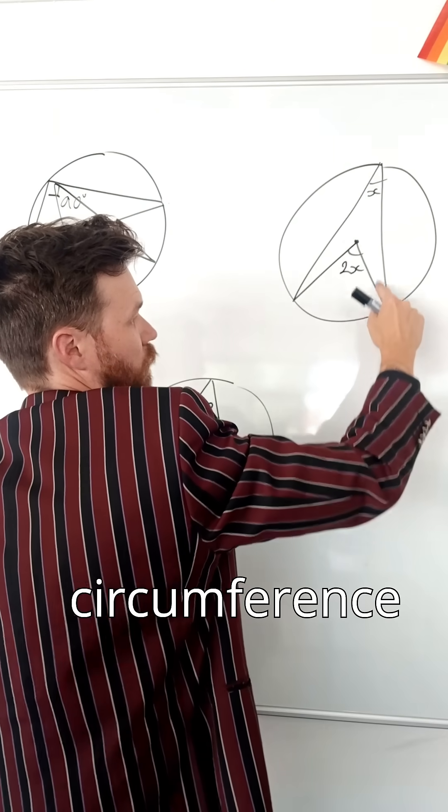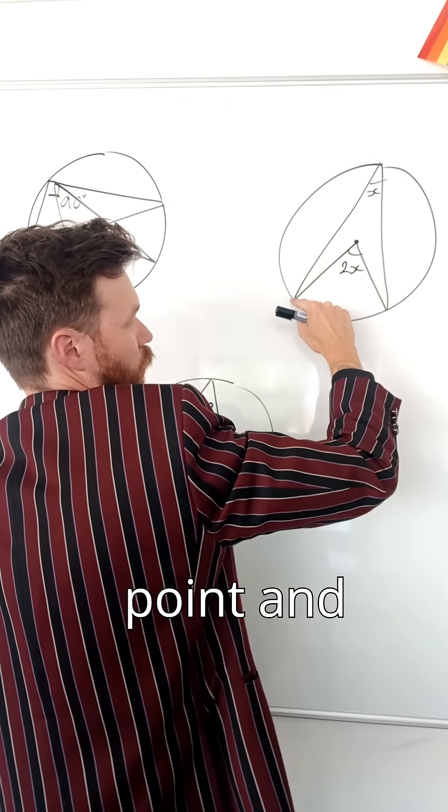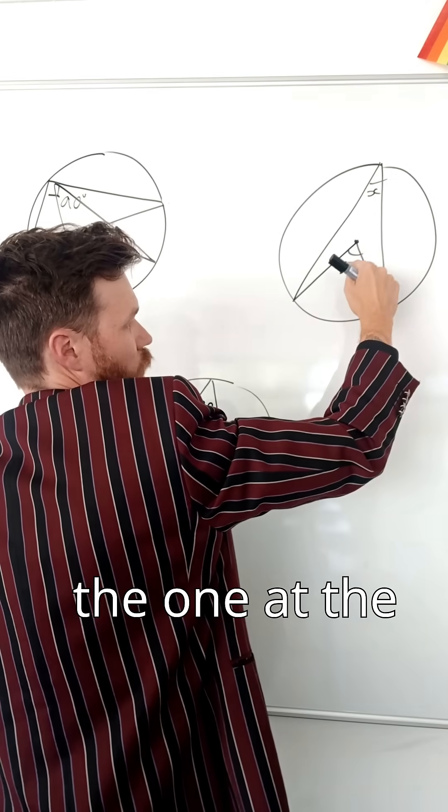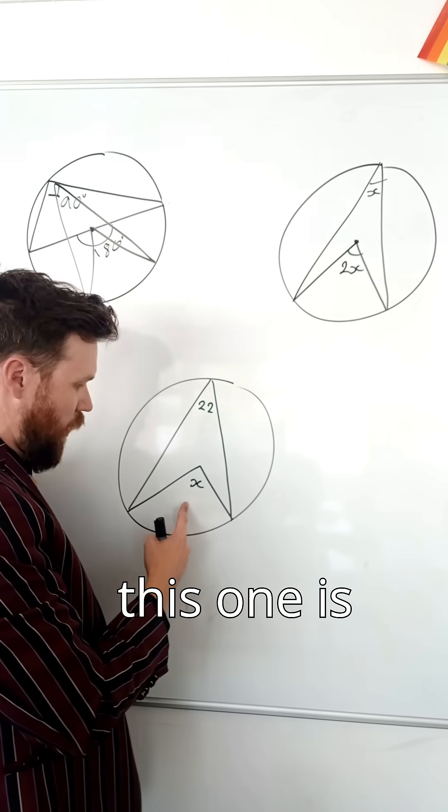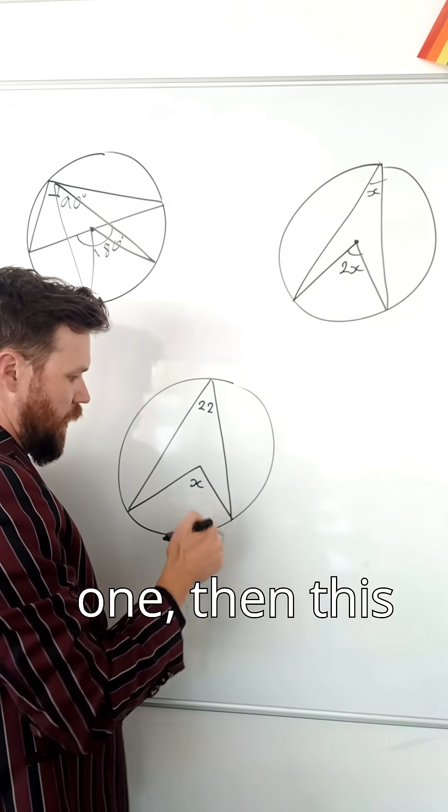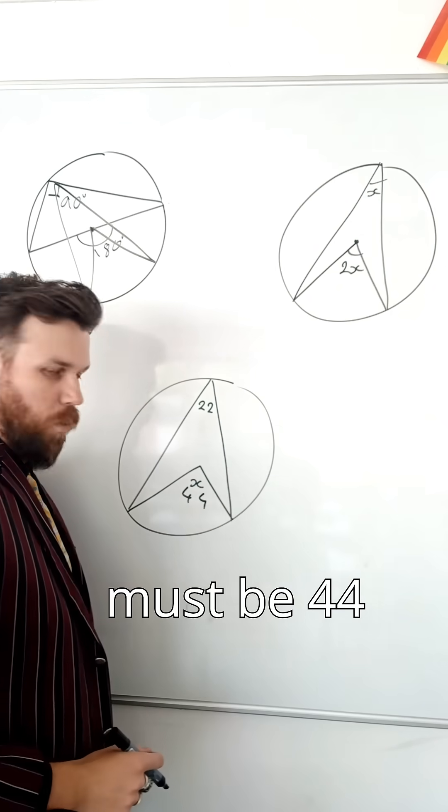Angle subtended at the circumference of the circle, from the same point, and subtended at the centre, the one at the centre will be double the one at the circumference. So, how does that help us here? Well, if this one is double this one, then this must be 44 degrees.